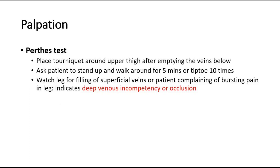The Perthes test is done by placing the tourniquet around the upper thigh after emptying the veins. Ask the patient to stand and walk for 5 minutes, or alternatively stand and tiptoe around 10 times. If there is filling of the superficial veins or the patient complains of bursting pain in the leg, this indicates deep venous incompetency or occlusion.